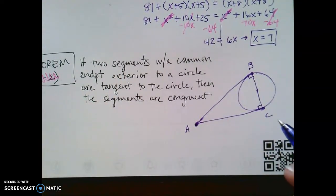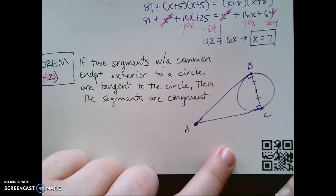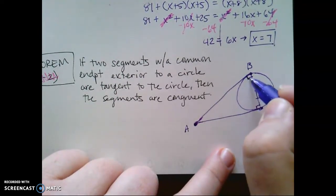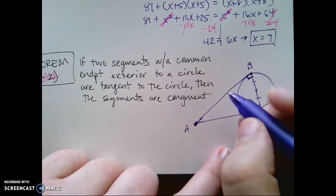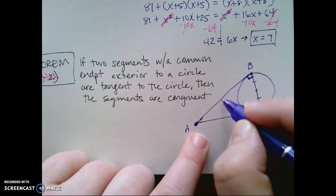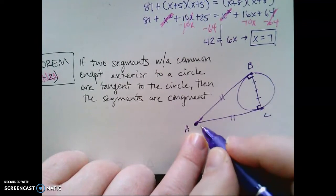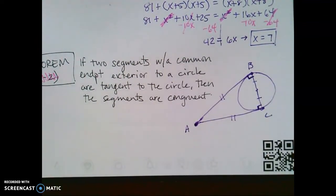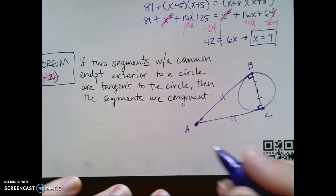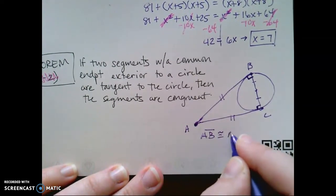then those segments are congruent. So in this case, because I know already that radii are congruent and tangents form right angles, then this theorem allows me to go, okay, so this segment that's tangent at B is congruent to this segment that's tangent at C because they both share the same endpoint on the outside of the circle. Now, this isn't the best picture that I've drawn, but that's something to keep in mind. In this case, AB is going to be congruent to AC. So we're going to use that as a guide for our last problem.